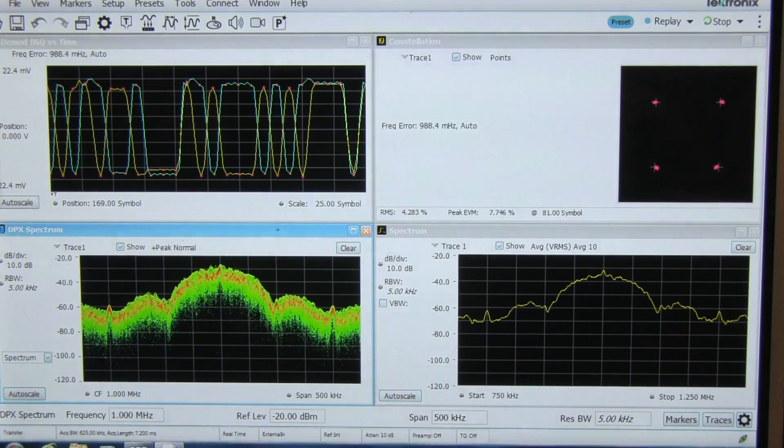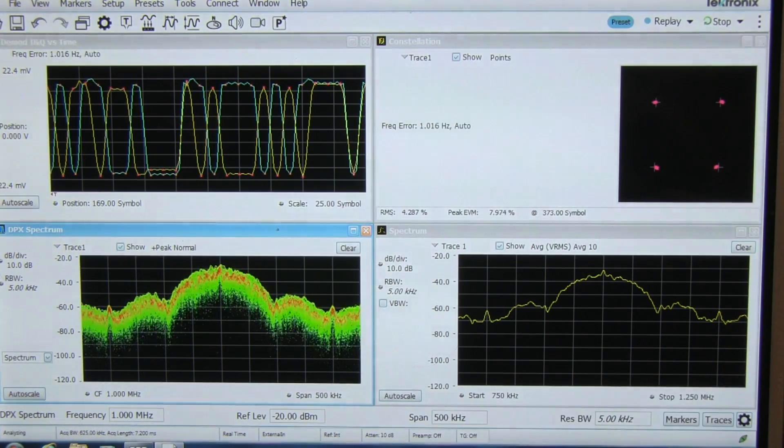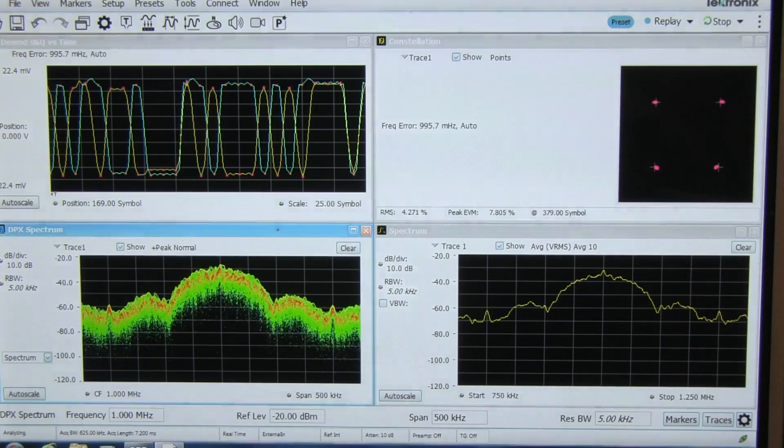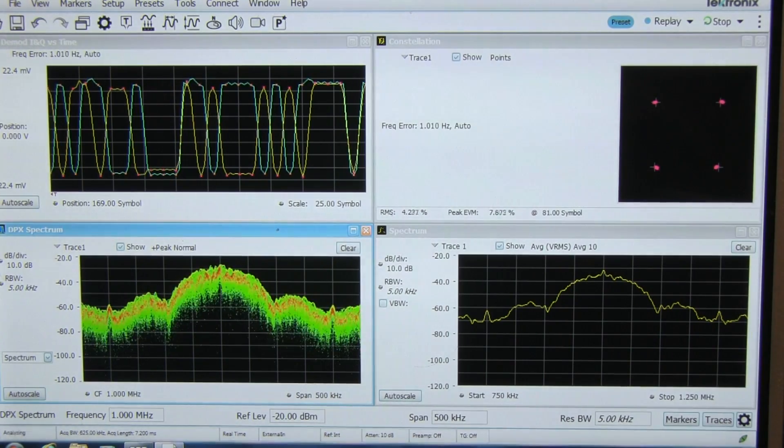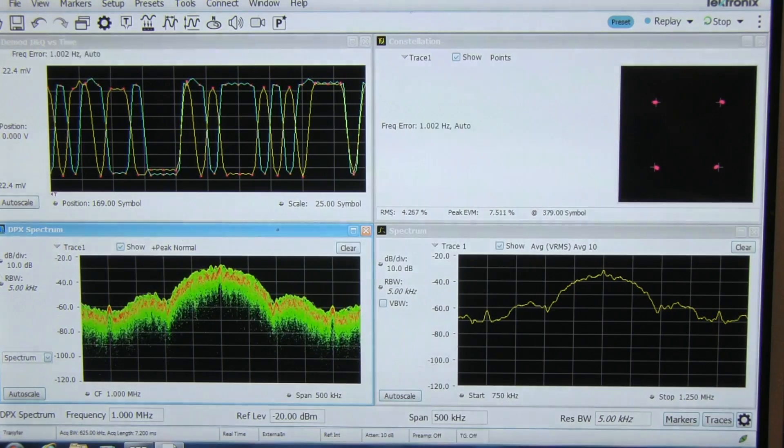Now carrier leakage is not that big of a deal for a simple modulation like BPSK or QPSK in this case, but it can be a very big deal for things like OFDM and that type of a thing.